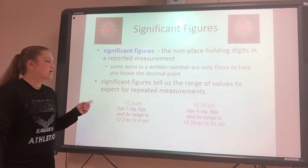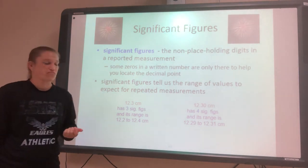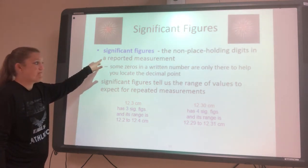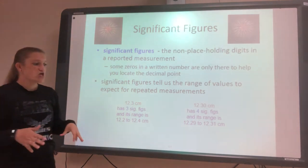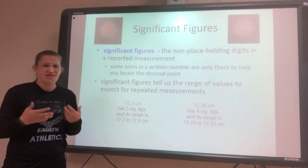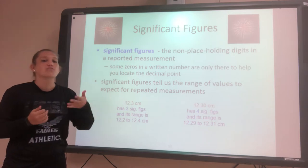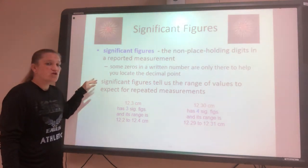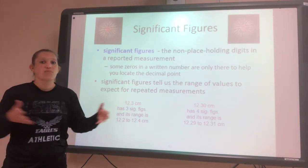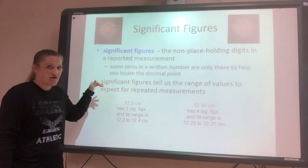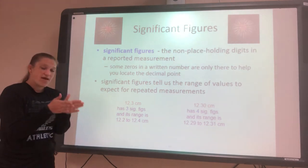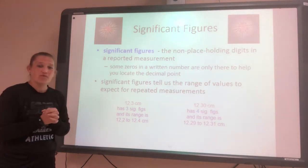So today in this session, we're going to talk about significant figures. Significant figures are the non-placeholding digits in a reported measurement. Sometimes we have zeros that are there just to let us know if it's a really big number or a really small number. The zeros don't really tell us anything other than how many decimal places the number has. Significant figures actually tell us whether numbers are there to give an actual value or just to indicate size. They're also going to help give us an idea of a range — how accurate or how precise can I be with my values?